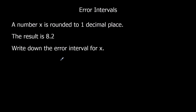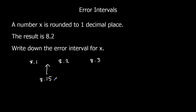So we're going to write down 8.2 in the middle, and we've got it to one decimal place. We're going to write down the number that comes before 8.2 — that's 8.1 — and what comes after 8.2 to one decimal place: 8.3. Our lower bound is going to be halfway in between 8.1 and 8.2, that's 8.15. And our upper bound is going to be halfway in between 8.2 and 8.3, which is 8.25.